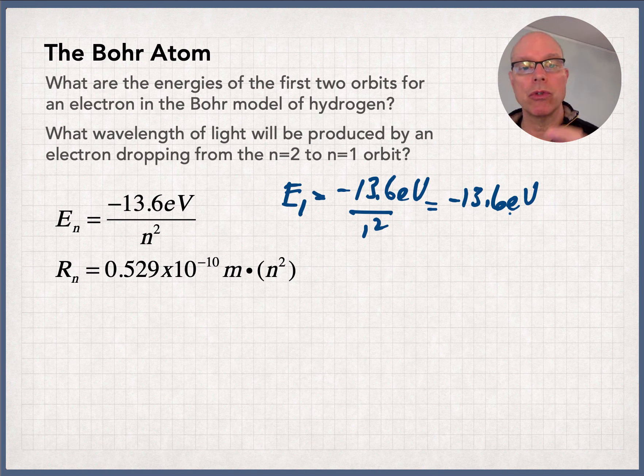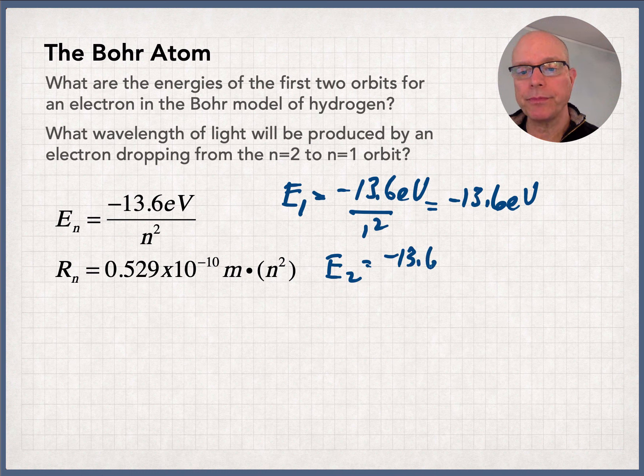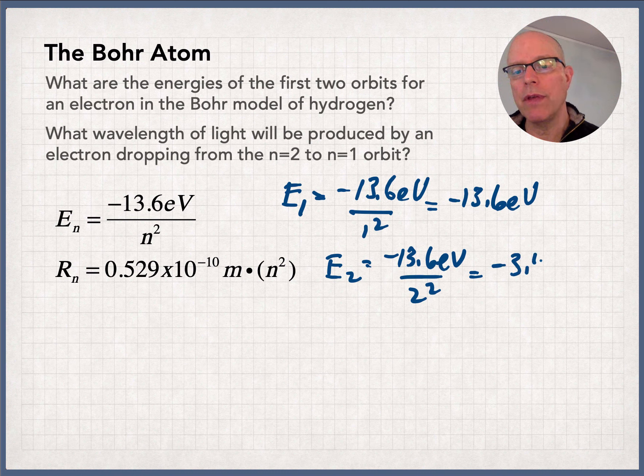That's a huge work function. It's really hard to rip away one electron from one proton when they're separated by this tiny, tiny distance, which is going to be 0.529 times 10 to the minus 10 meters. To get E2, do the same thing, negative 13.6 eV over 2 squared, and we get negative 3.4 eV.